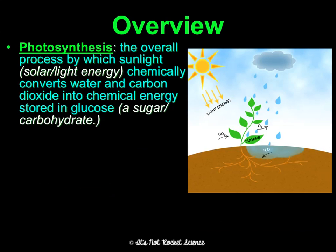Photosynthesis is the overall process by which sunlight, or solar energy or light energy, chemically converts water and carbon dioxide into chemical energy stored in glucose, which is a sugar or carbohydrate. Light energy comes into the plant, it takes in carbon dioxide through its stomata, water through its roots, then it makes sugars and releases oxygen — but that's just a byproduct. Photosynthesis isn't designed to make oxygen; it's designed to make sugars, though oxygen being released is a very nice perk.